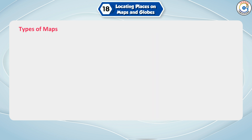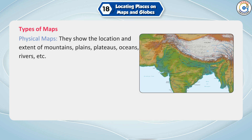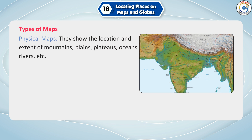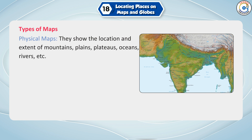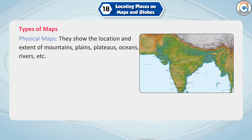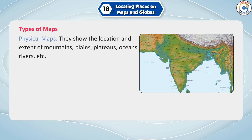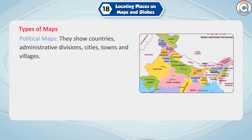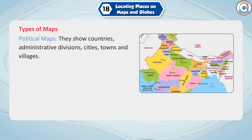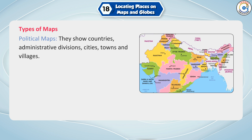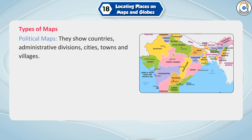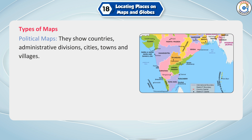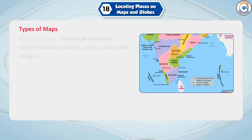Types of Maps. Physical Maps: They show the location and extent of mountains, plains, plateaus, oceans, rivers, etc. Political Maps: They show countries, administrative divisions, cities, towns and villages.